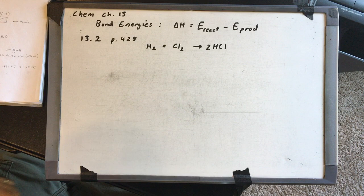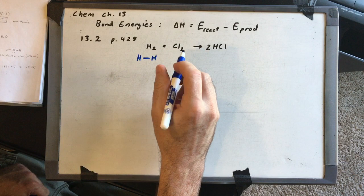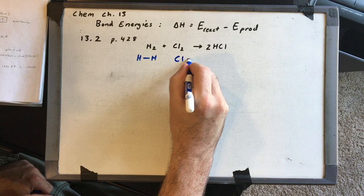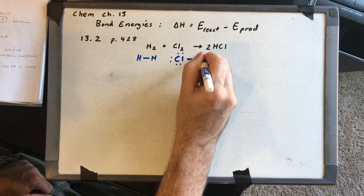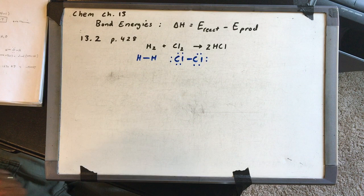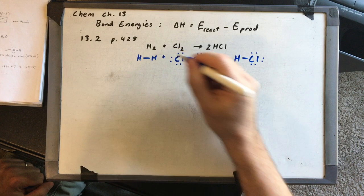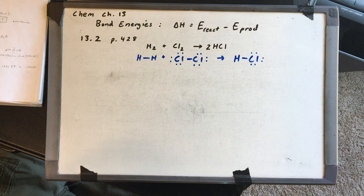For the bond energy method, draw the Lewis structure of each compound. H2 has a single H–H bond. Cl2 has a single Cl–Cl bond — chlorine has seven valence electrons. For HCl, hydrogen can only take a single bond, so it's a single H–Cl bond. We just need to know the type of bond for each molecule.